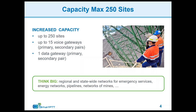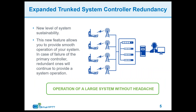Some of the enhancements include increasing the number of sites we can support up to 250. We also support up to 15 voice gateways and one data gateway, both primary and secondary. This means we're now going to support much larger MotoTurbo Capacity Max systems. We also support redundancy for the Capacity Max system server.